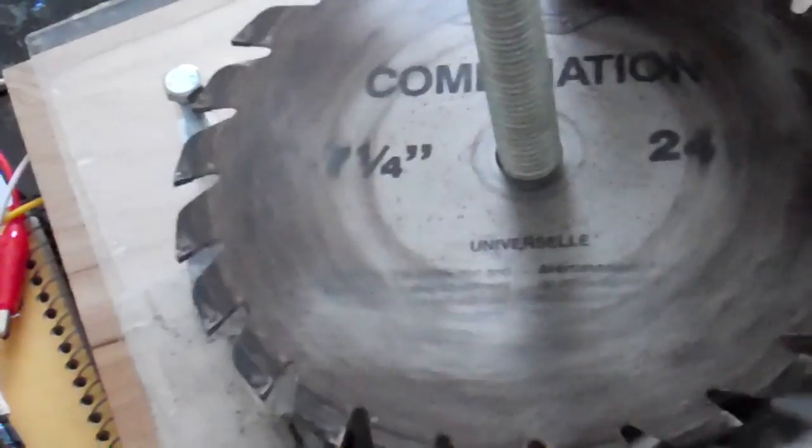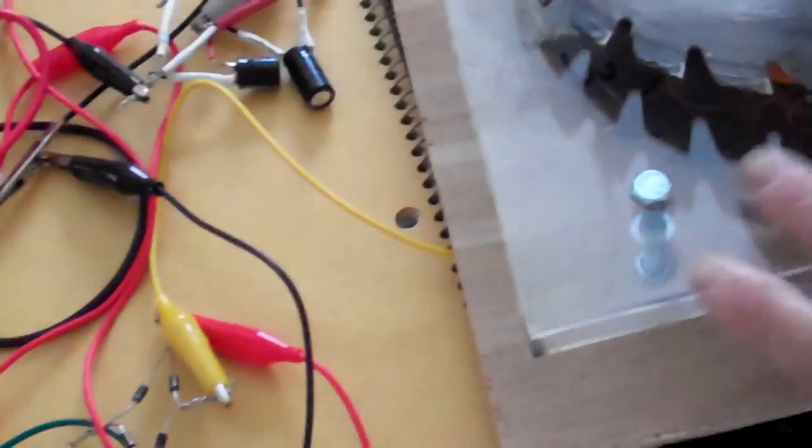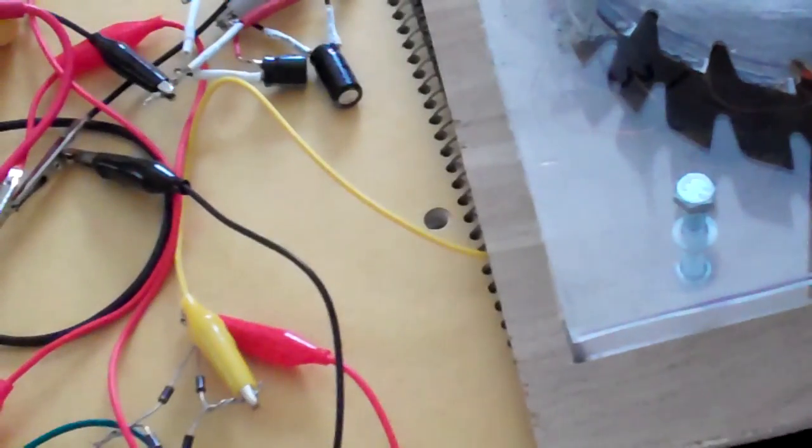So basically I have two plexiglass here and then I have a lot of magnets inside and a couple of five-eighths nuts to hold the thing in place so I can do the test. And six coils, three phase.